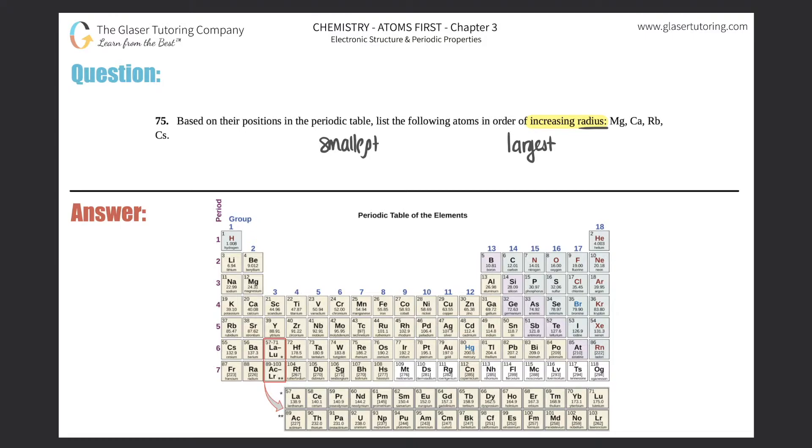Whenever they talk about radius, it comes down to a trend you'll probably have to memorize, but it's very simple: going from left to right on the periodic table, your atomic radius will decrease.